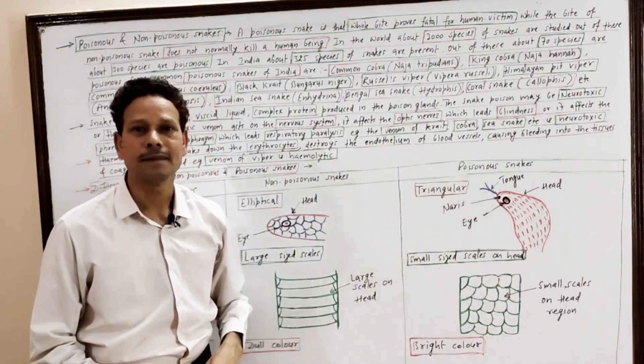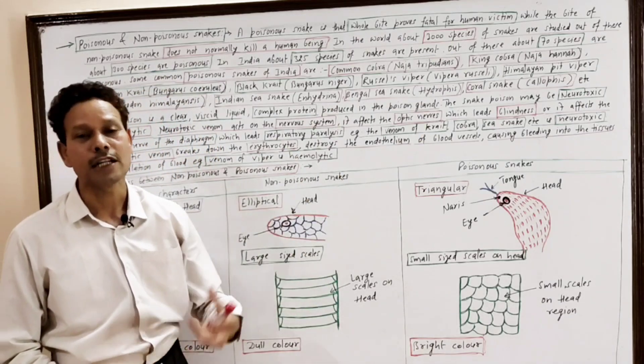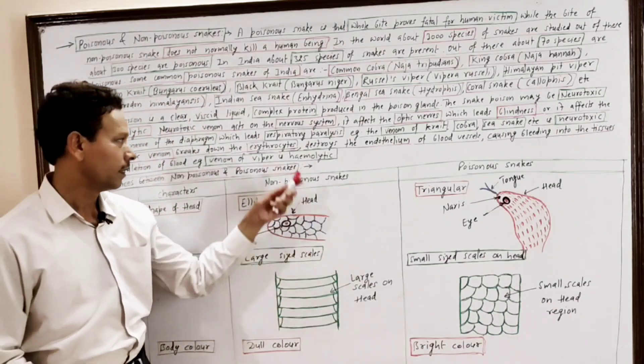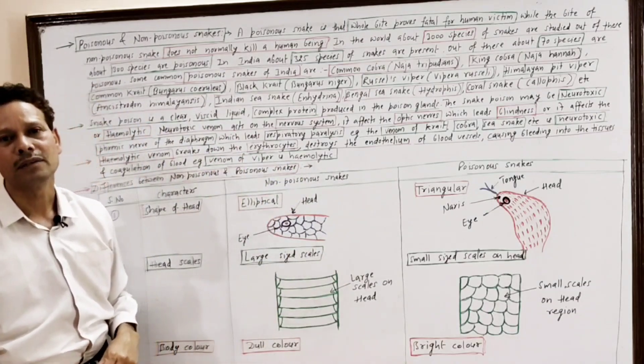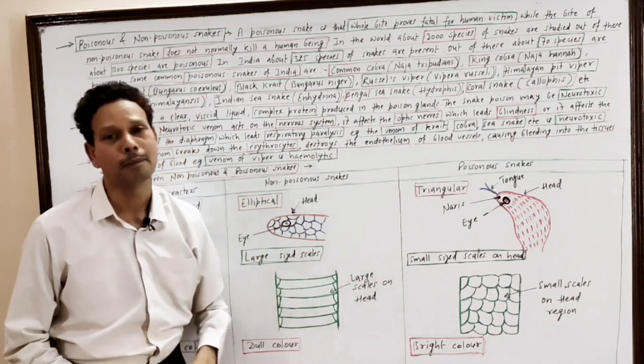As a result, the wall of blood vessels gets destroyed. It causes leakage of blood in body tissues as well as coagulation of blood. Hemolytic venom is commonly reported in viper and pit viper.